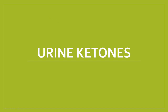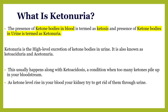Hi friends, welcome to Classes by Lab Doctor. Today's class we will discuss ketones in the urine. Ketonuria is the presence of ketone bodies in the urine. Ketosis is when the ketone bodies are present in the blood — like in diabetic ketoacidosis.